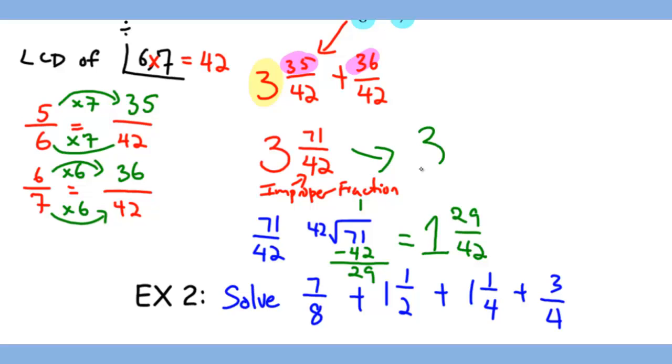So you are now adding 3 whole plus 1 and 29/42 together, which gives you the final answer of 4 and 29/42.